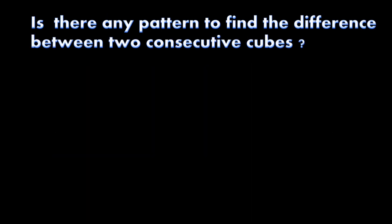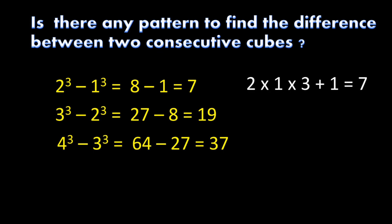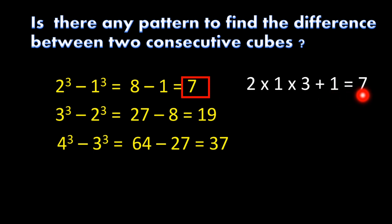Is there a pattern for the difference between two consecutive cubes? We find: 2 cube − 1 cube = 7, 3 cube − 2 cube = 19, 4 cube − 3 cube = 37. The pattern is: take the two base numbers, find their product, multiply by 3, and add 1 to get the difference.